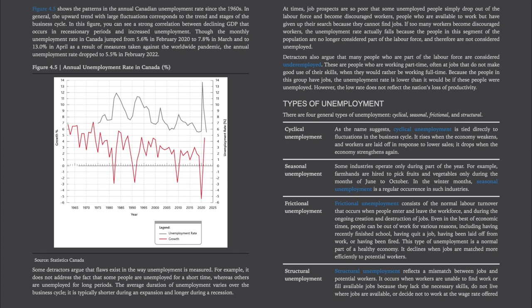Seasonal unemployment: some industries operate only during part of the year. For example, farmhands are hired to pick fruits and vegetables only during the months of June to October. In the winter months, seasonal unemployment is a regular occurrence in such industries. Frictional unemployment consists of the normal labor turnover that occurs when people enter and leave the workforce, and during the ongoing creation and destruction of jobs. Even in the best of economic times, people can be out of work for various reasons, including having recently finished school, having quit a job, having been laid off, or having been fired. This type of unemployment is a normal part of a healthy economy.